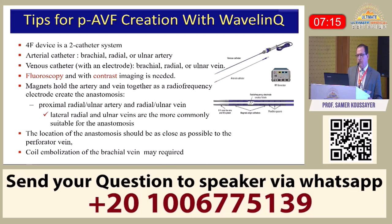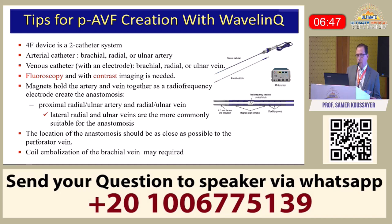The Wavelink is a 4 French device. It has two catheters — an arterial catheter that goes through the radial or ulnar artery, and a venous catheter with an extra load that goes through the radial or ulnar vein. It requires fluoroscopy and contrast. A magnet holds both catheters together and then it fires using radiofrequency, creating an anastomosis between the proximal radial or ulnar artery and vein. The anastomosis should be placed very close to the perforator to direct blood to the superficial system, and sometimes coil embolization of the deep vein is required to augment flow to the superficial venous system.